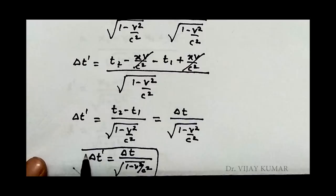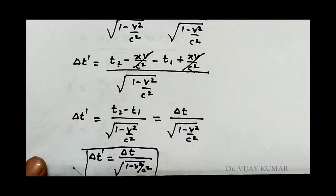As the velocity of frame is increased, the denominator will be decreased and delta t dash will be increased. That is known as time dilation. Thank you.